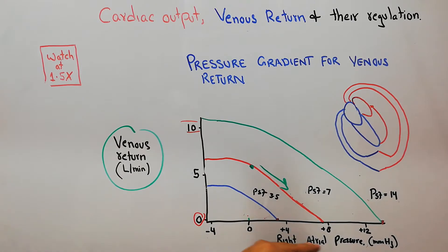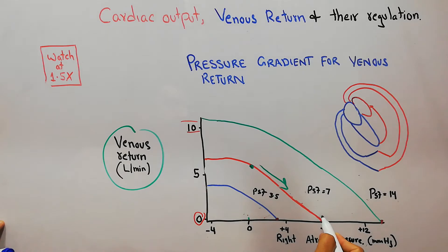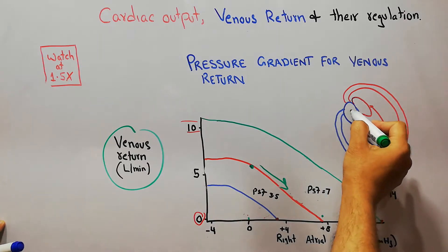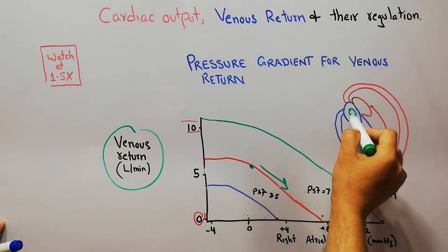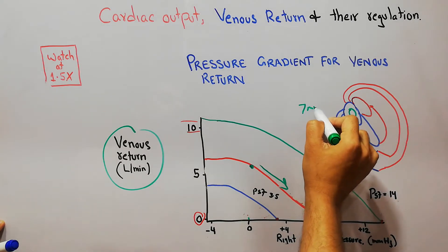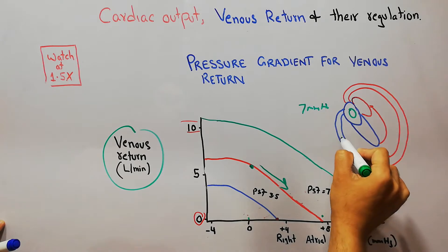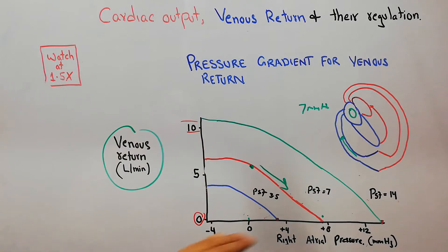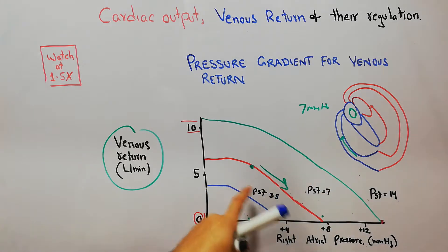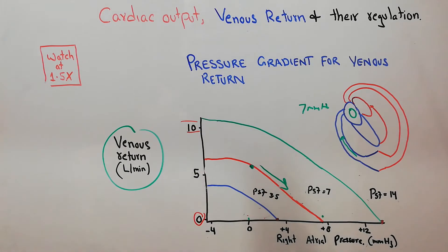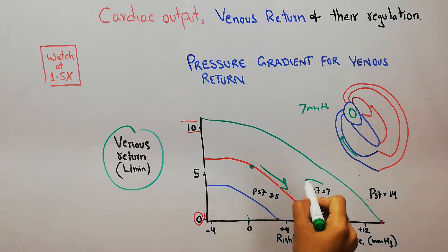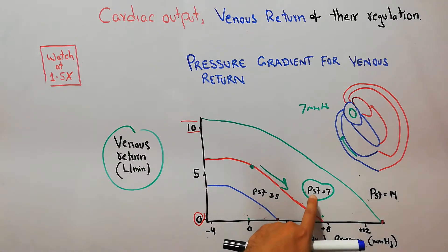When the right atrial pressure starts increasing, the venous return starts decreasing, and at around 7 mmHg, when the pressure in the right atrium increases from 0 to 7 mmHg, the return of blood stops altogether — it touches the zero level. This level at which venous return becomes 0 is considered the mean systemic filling pressure.